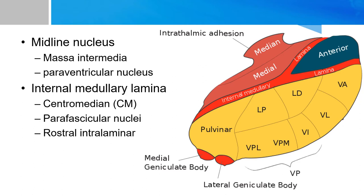There are also a couple of nuclei within the internal medullary lamina. To be precise, there are three of them: the central median, the paraventricular nuclei, and the rostral intralaminar group. We will cover those in future slides.